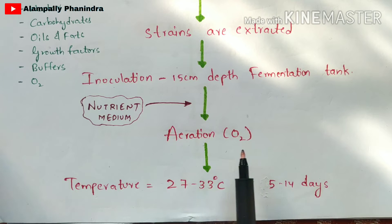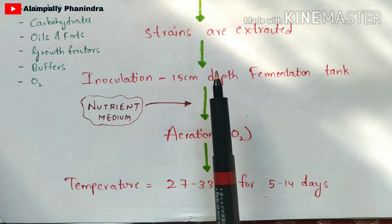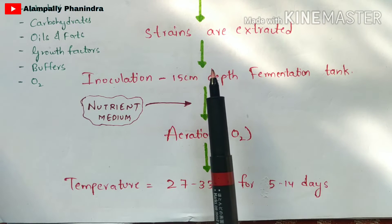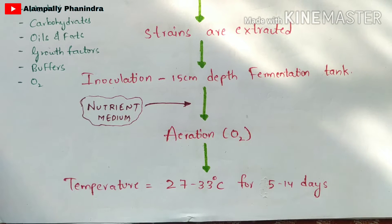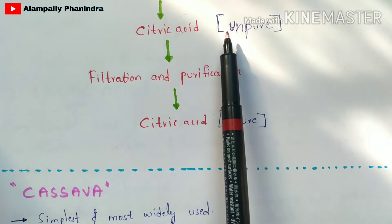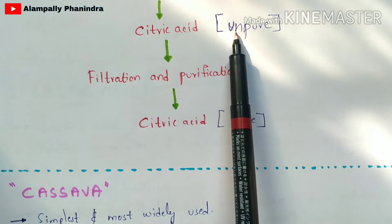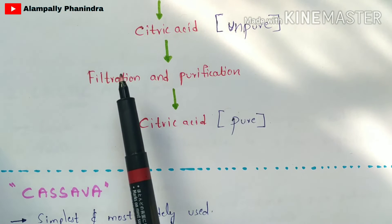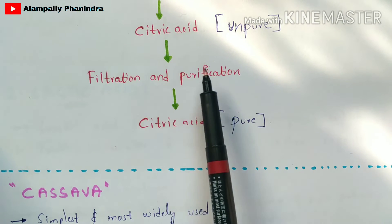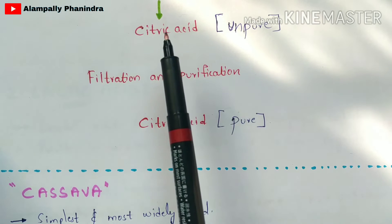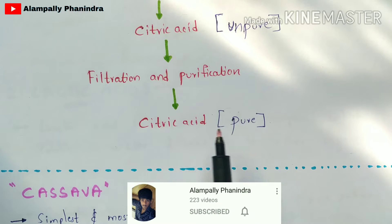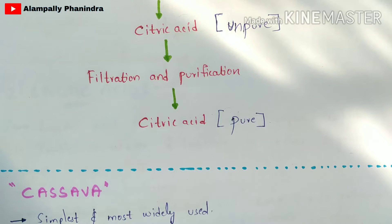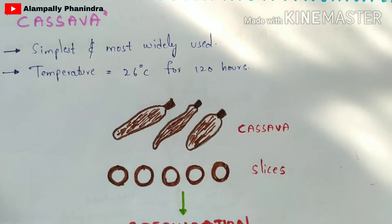The number of Aspergillus niger organisms increases, helping in the production of citric acid. Finally, citric acid is produced, but in an impure form. To make it pure, you perform filtration and purification — the impure citric acid is converted into pure citric acid. This is how citric acid is produced using fermentation technology with Aspergillus niger.